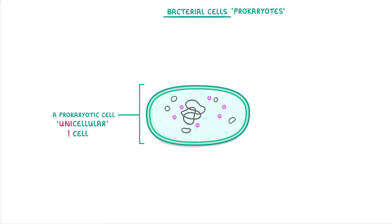Just like the eukaryotic cells that we've seen so far, bacteria also have a cell membrane, a cell wall, ribosomes, and cytoplasm.